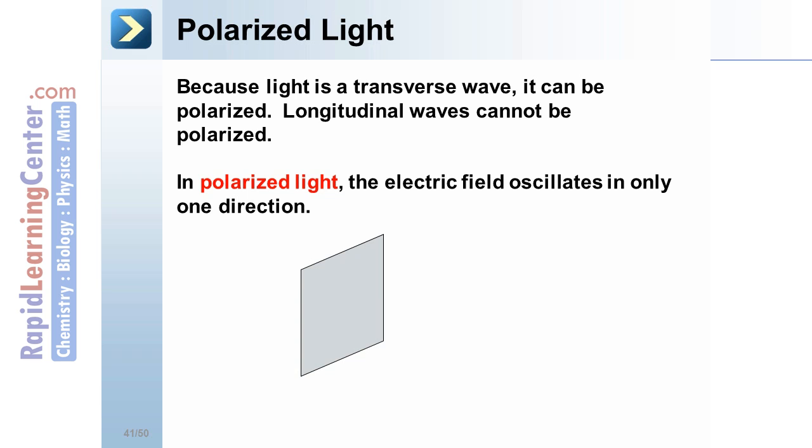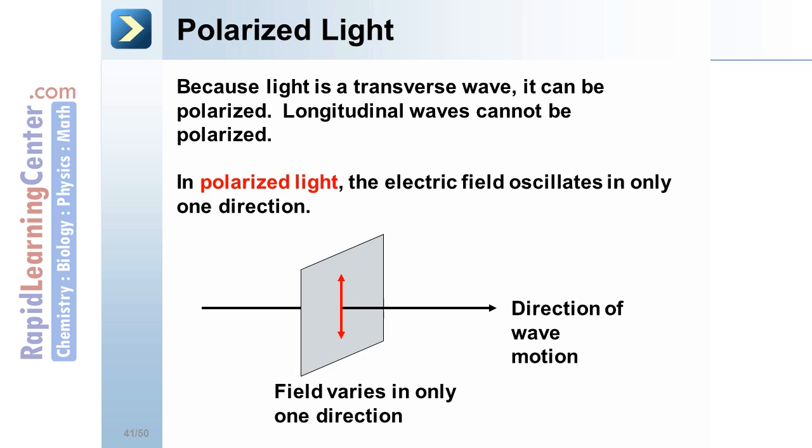As you can see here, compared to the direction of wave motion, the light is only vibrating in one particular direction. This is polarized light.